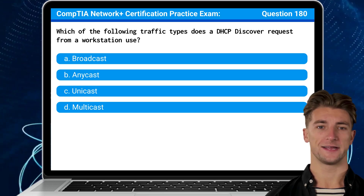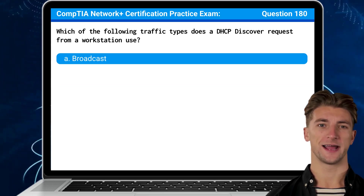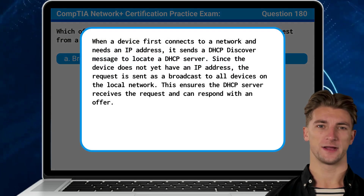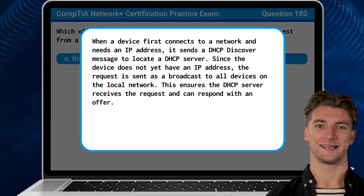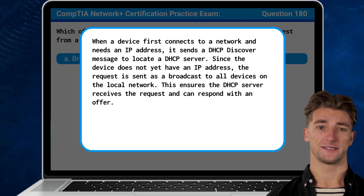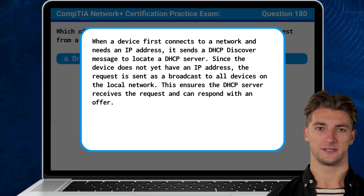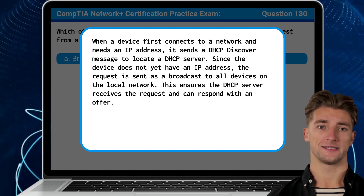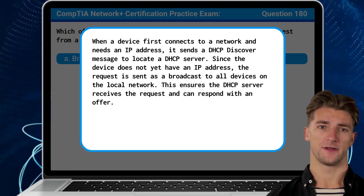The answer is A: Broadcast. When a device first connects to a network and needs an IP address, it sends a DHCP Discover message to locate a DHCP server. Since the device does not yet have an IP address, the request is sent as a broadcast to all devices on the local network. This ensures the DHCP server receives the request and can respond with an offer.